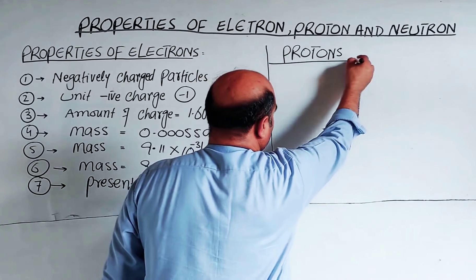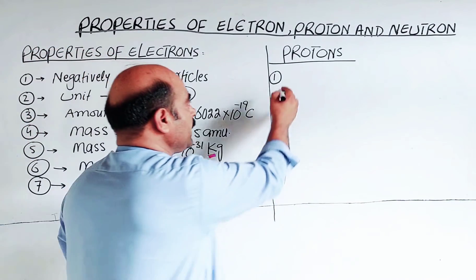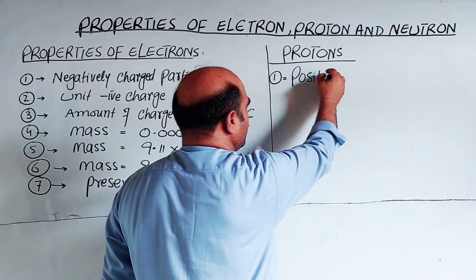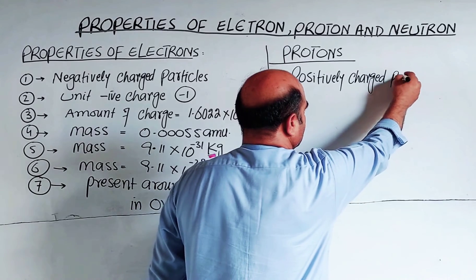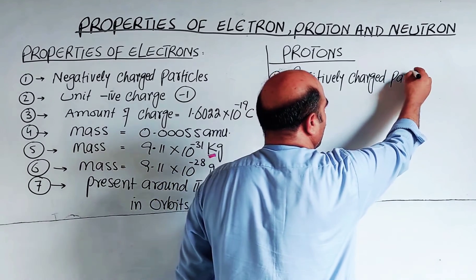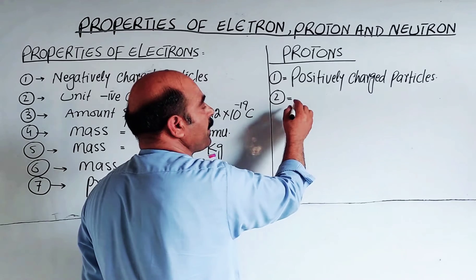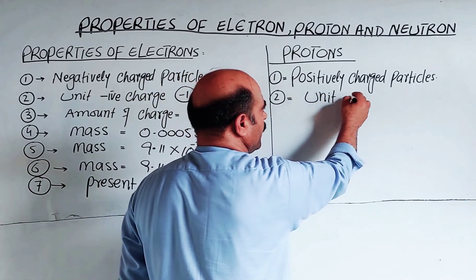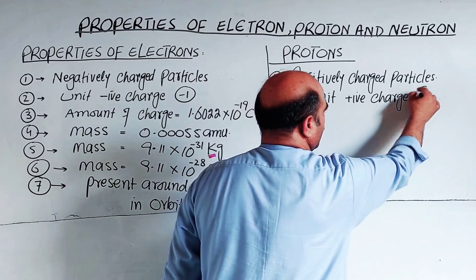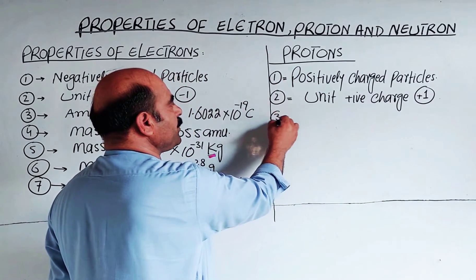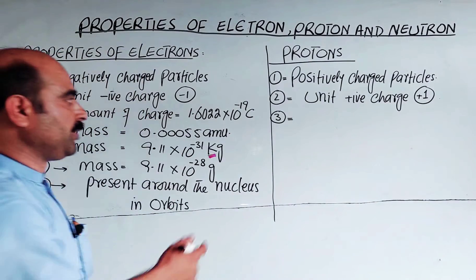Now for the properties of the proton. The first property: the proton has a positive charge — it is a positively charged particle. The proton has a unit positive charge of plus one. So its charge is plus one.